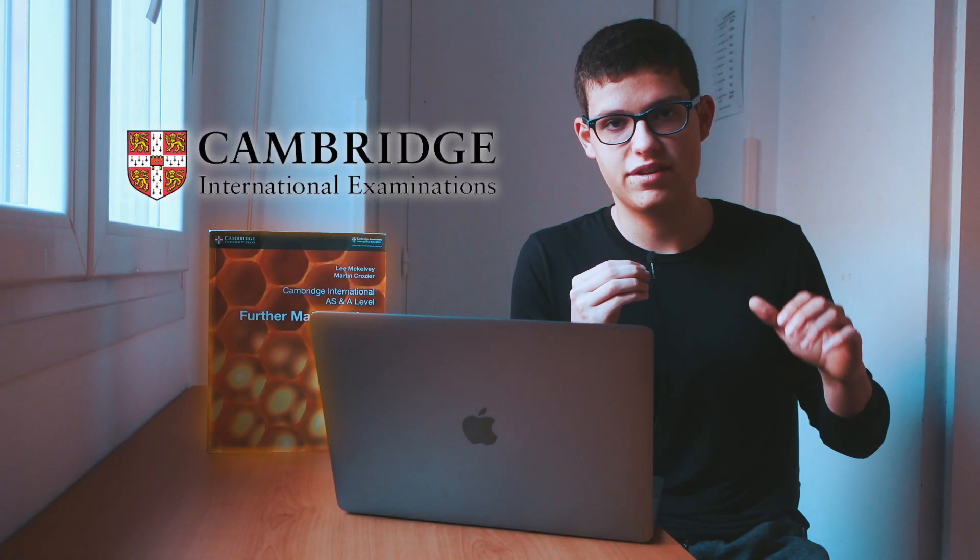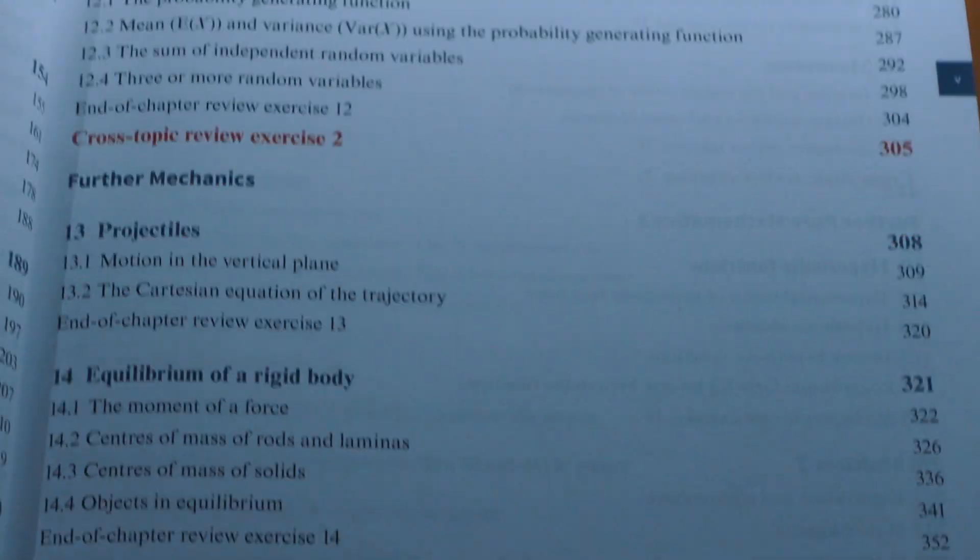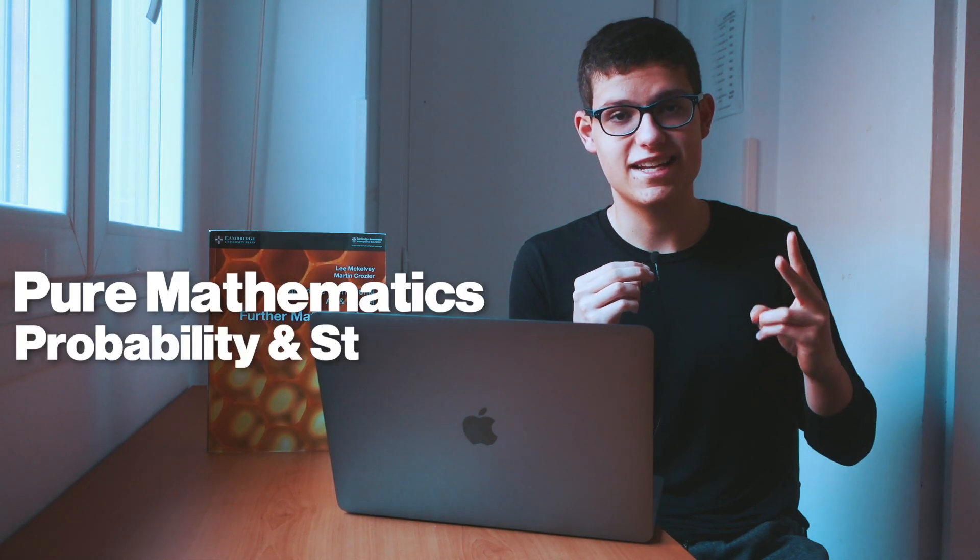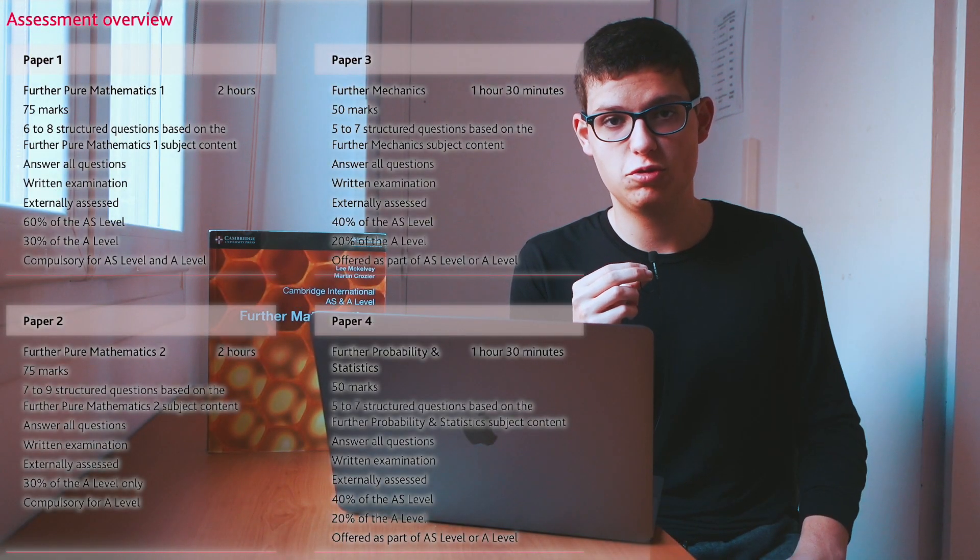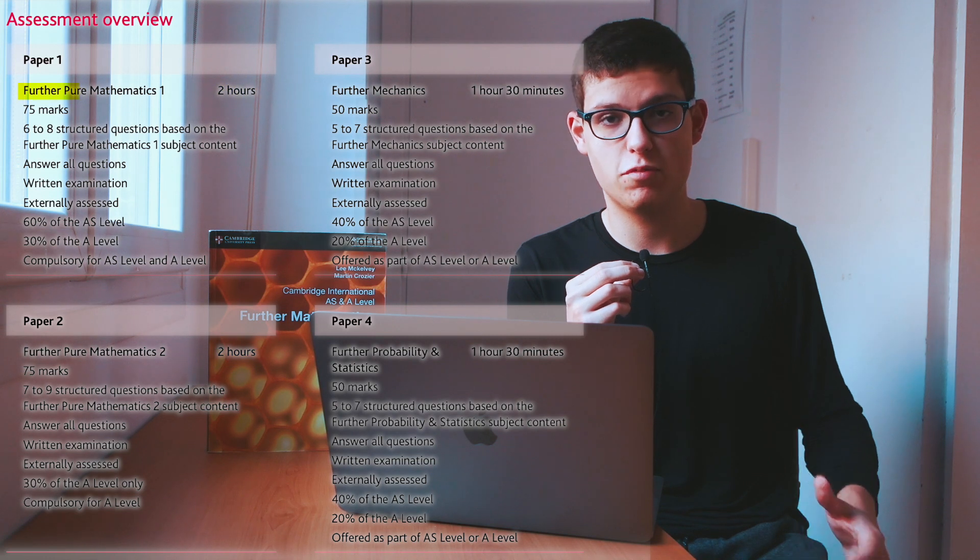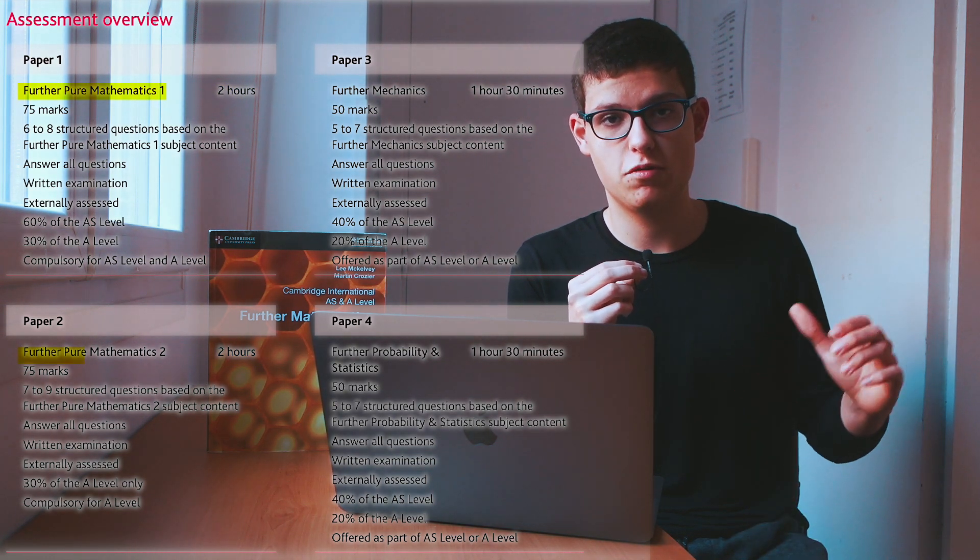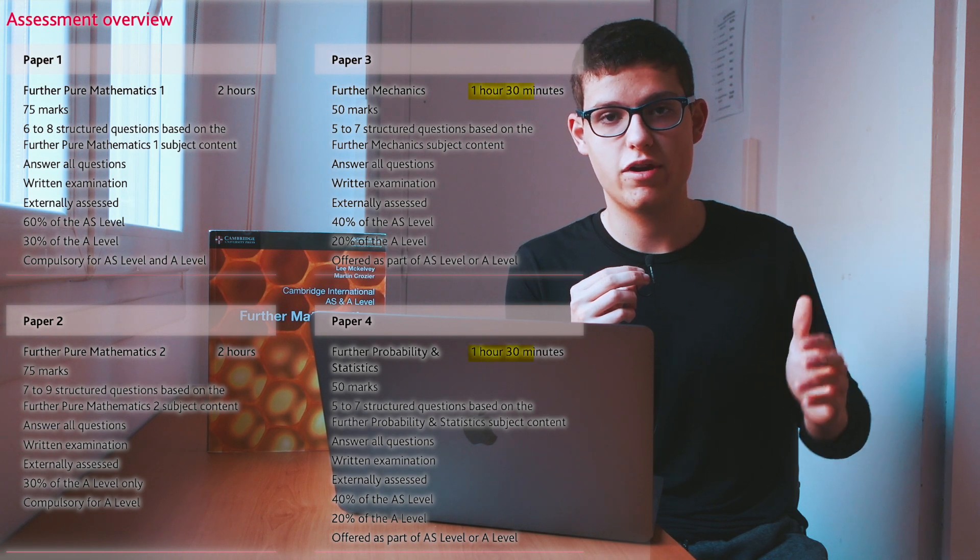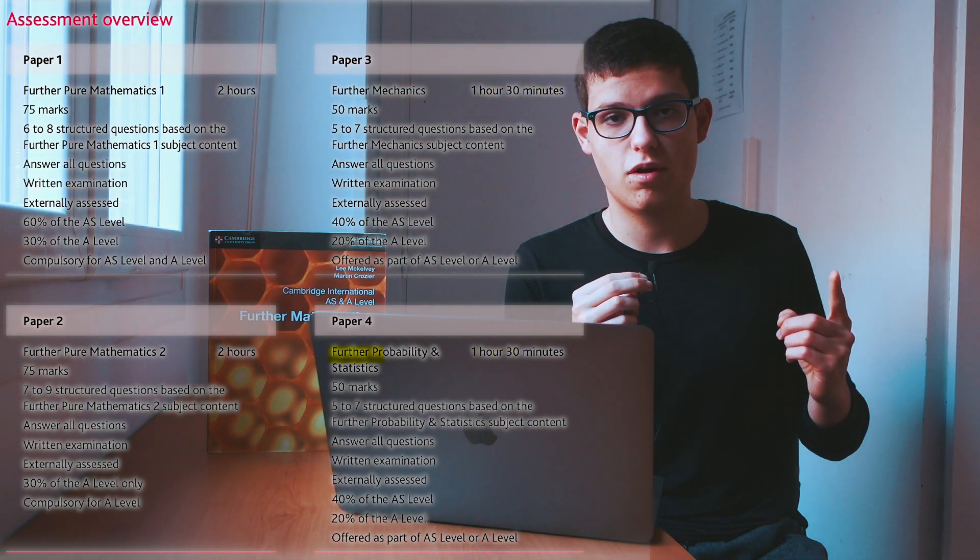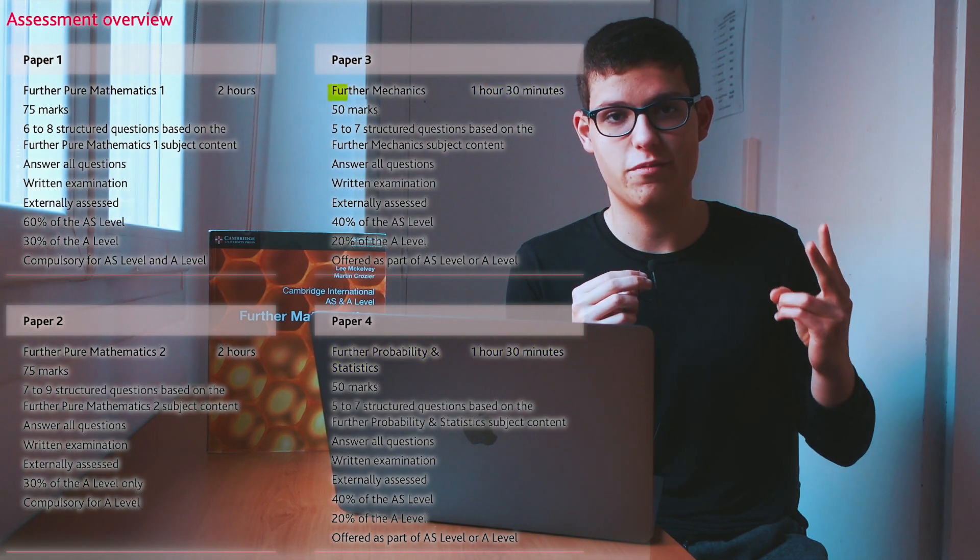So first of all, I am taking the CIE further maths syllabus. This includes 24 different topics across different areas of math involving pure mathematics, probability and statistics and mechanics. I personally need to take four different further maths exams. I have two two-hour exams of further pure mathematics 1 and further pure mathematics 2 and then I also have two 1 hour and 30 minute exams about further probability and statistics and further mechanics.